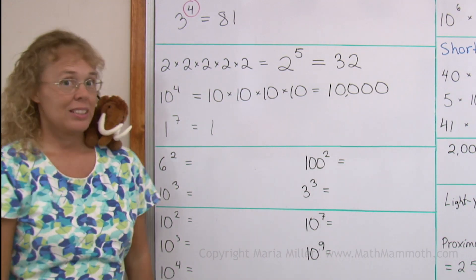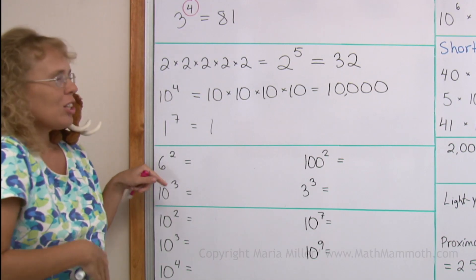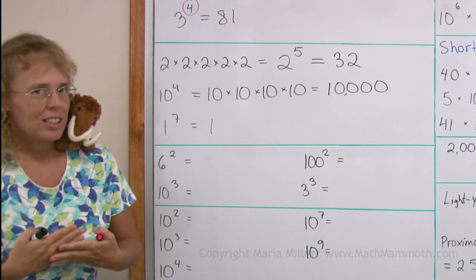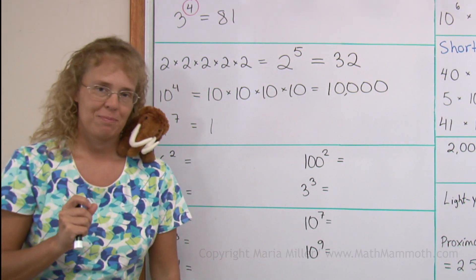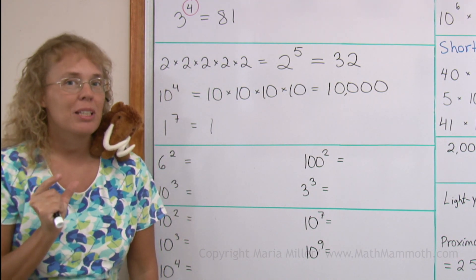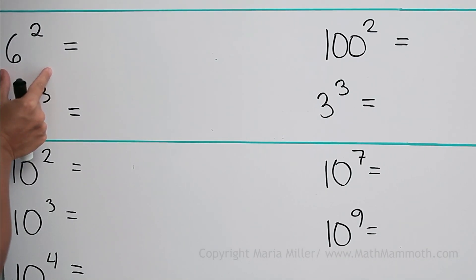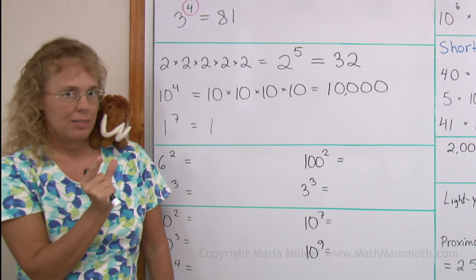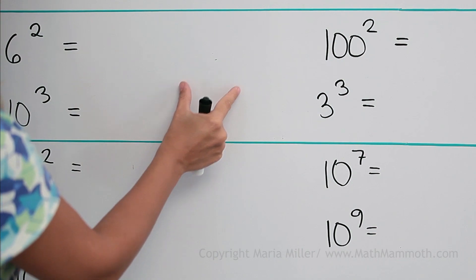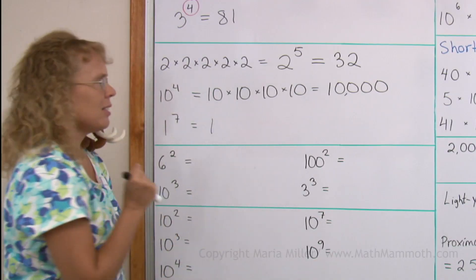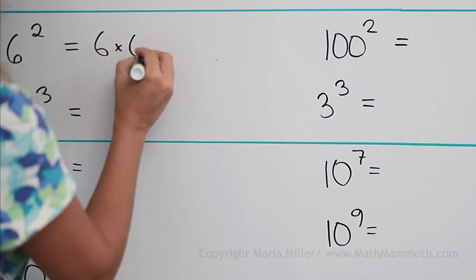6 to the second power — we usually call this something else. We call it 6 squared, because this is the area of a square with sides 6. If you have a square with sides 6 and 6, then its area is 6 times 6, which is 36.